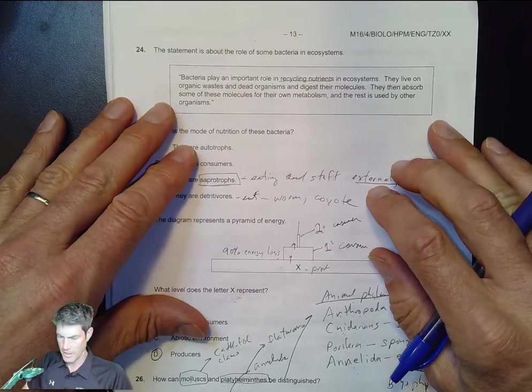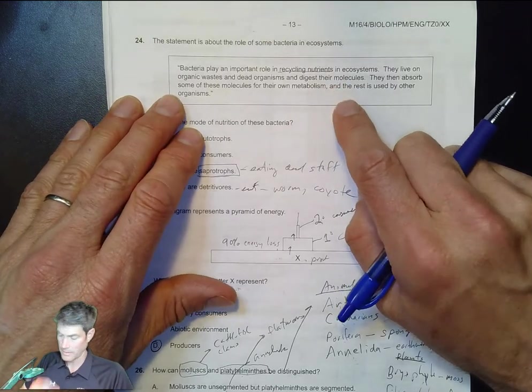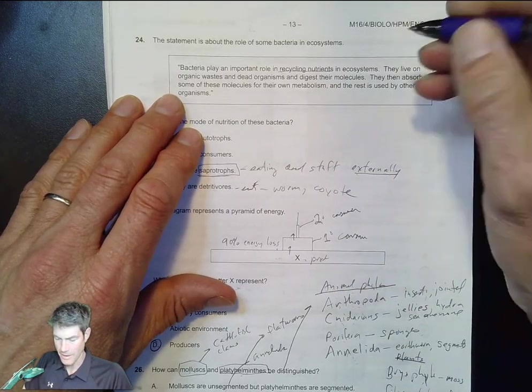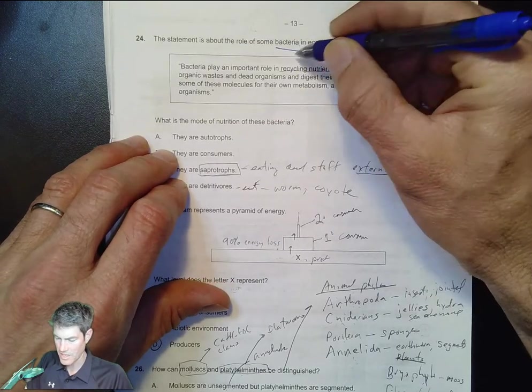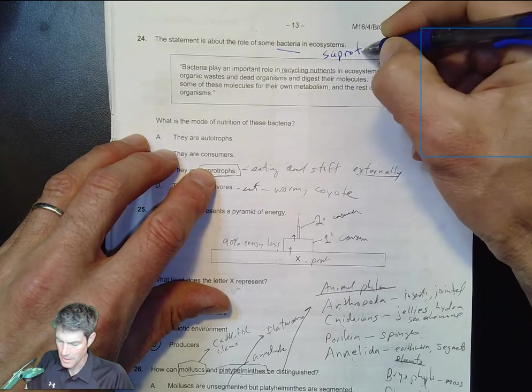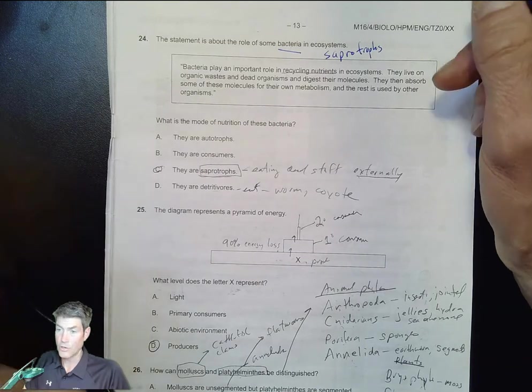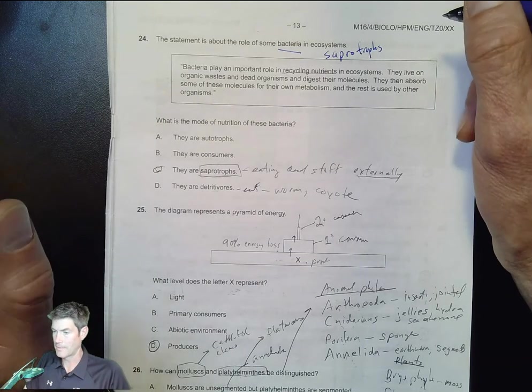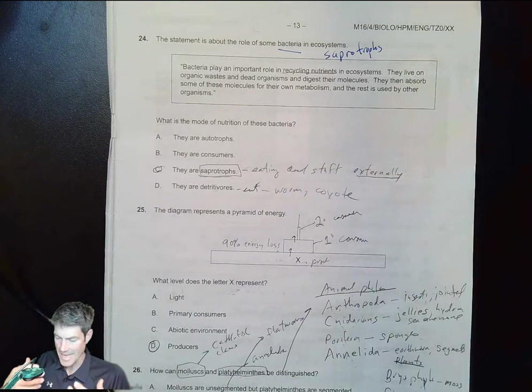Bacteria in ecosystems - remember to use your highlighter or pen to underline important information. Bacteria are all about recycling, often called saprotrophs. That's basically the same thing as decomposer, but you also have detritivore in there as vocab. Decomposers eat, physically ingest it, and it goes in their body.